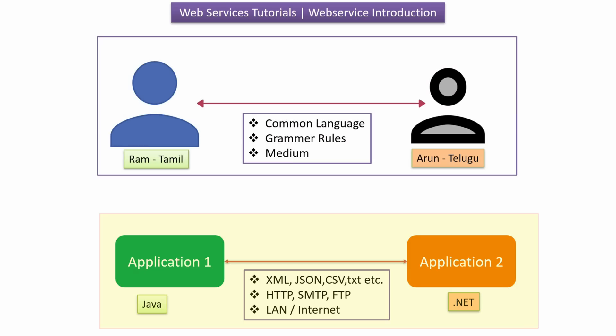Here you can see application 1, which is written in Java, and application 2, which is written in .NET. Even though they are built in different programming languages, they need to communicate. Just like Ram and Arun use a common language to talk, application 1 and application 2 use common formats like XML, JSON, CSV or text files to exchange information. They also use protocols like HTTP, SMTP or FTP to send and receive data.